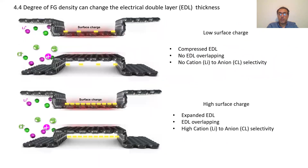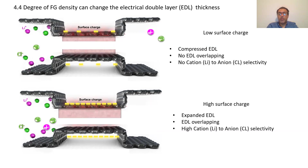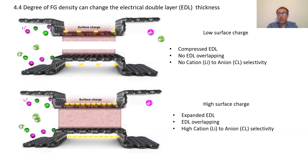The degree of functional group density can also change the electric double layer thickness. A low surface charge compresses the electric double layer, so there is no cation-to-anion selectivity. On the other hand, high surface charge expands the EDL and results in high cation-to-anion selectivity.